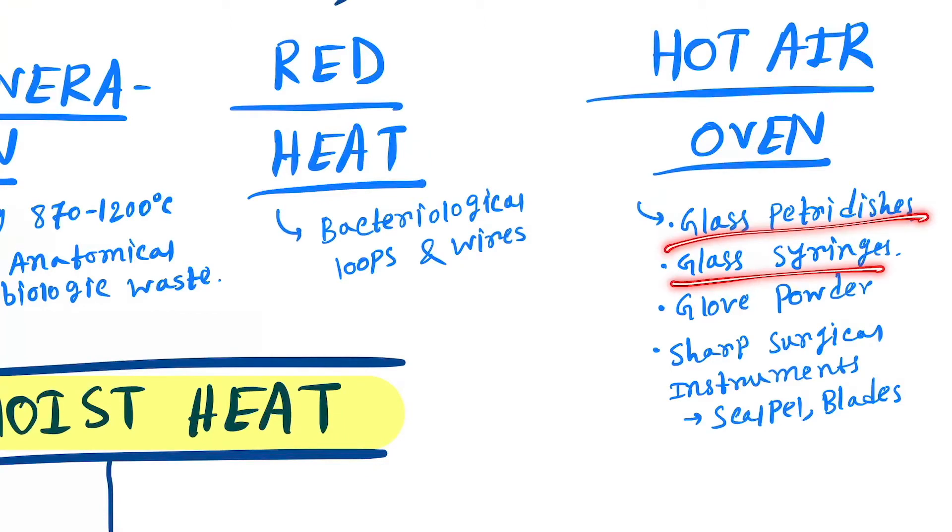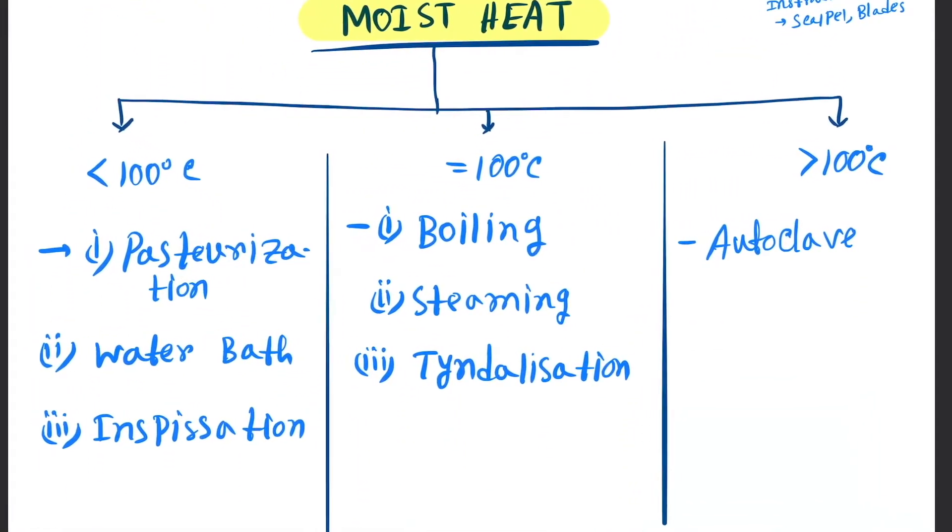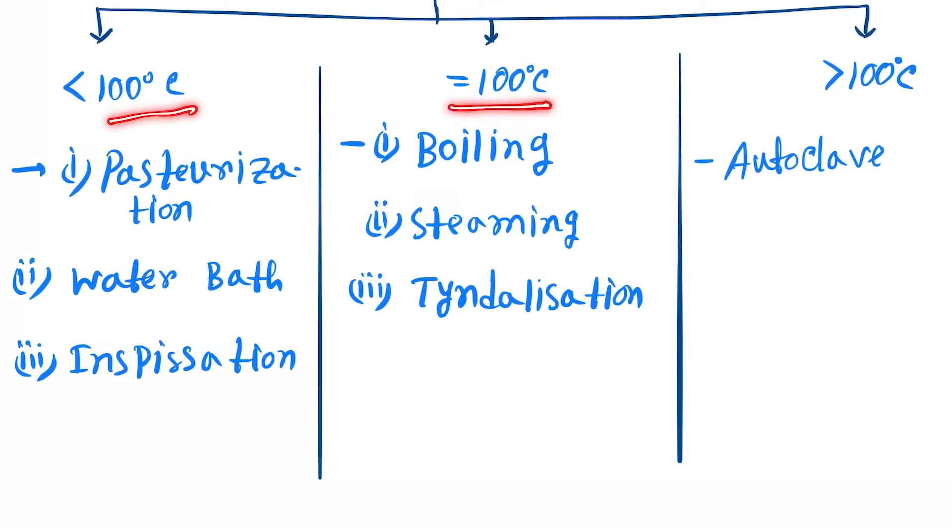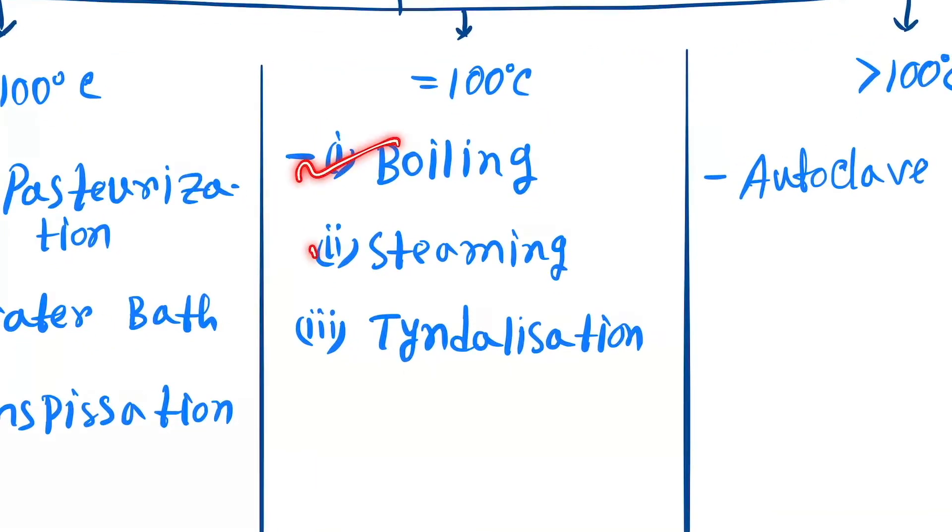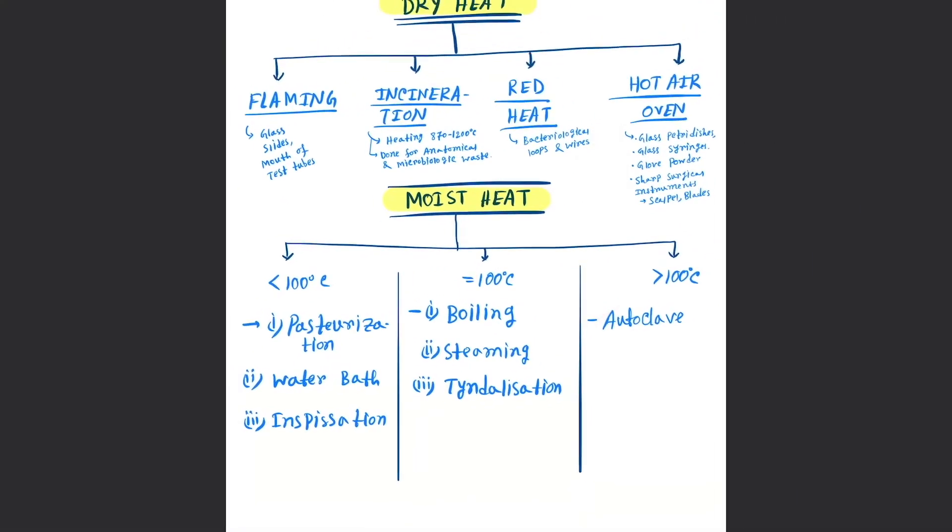Moist heat is of three types. First is less than 100 degrees Celsius, next is equal to 100 degrees Celsius, and next is greater than 100 degrees Celsius. Less than 100 degrees: pasteurization used in milk, water bath, and inspissation. At 100 degrees: boiling, steaming, and tyndallization. Greater than 100 degrees: autoclave.